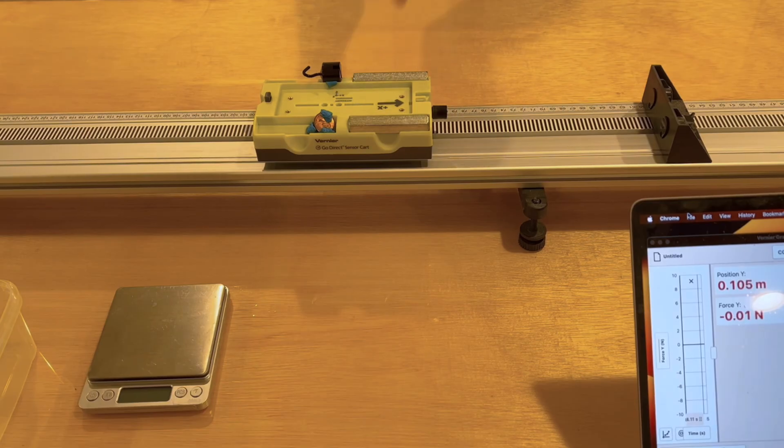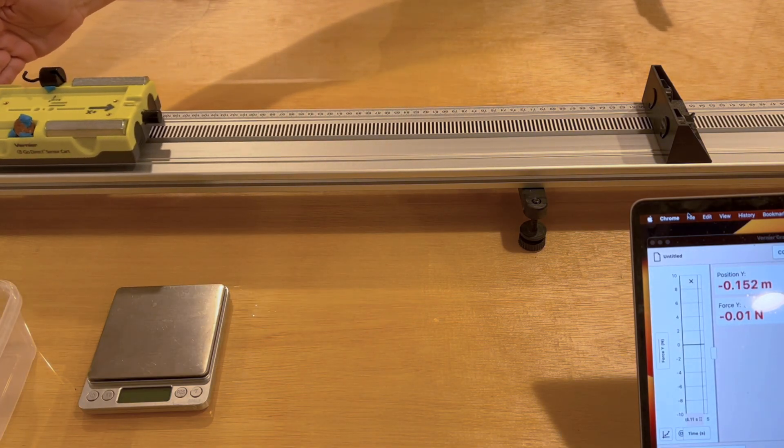We'll collect data from this cart on this track before, during, and after it collides into a barrier at the end of the track. The track provides a relatively low friction surface for the cart to roll along.